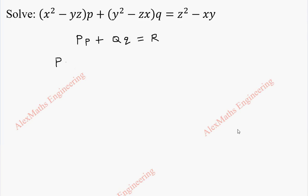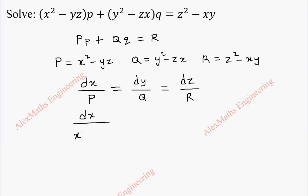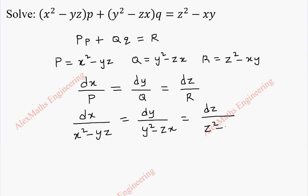From this, capital P is the term with small p, that is x² minus yz. Capital Q is y² minus zx and capital R is z² minus xy. To get the solution, we have to solve dx by capital P equal to dy by capital Q equal to dz by capital R. By substituting P, Q, R, we get dx by (x² minus yz), then dy by (y² minus zx) and dz by (z² minus xy).